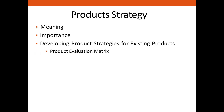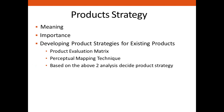To develop long-term product strategies for existing products, the following tools are needed: first, the product evaluation matrix, which evaluates performance of all existing products or product lines; second, perceptual mapping technique, which examines the relative strengths and weaknesses of the company's products compared with competitors. Based on these two analyses, the company decides the product strategy — whether to continue, modify, eliminate, or add a new product line.